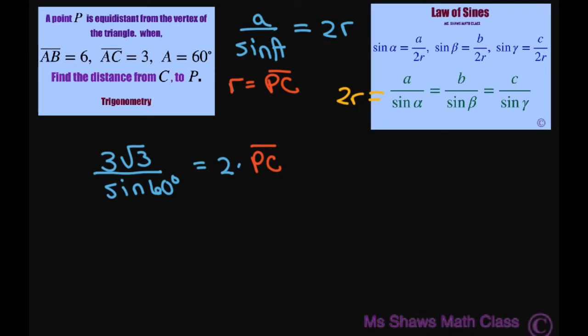So solving for this, we're going to get 3 square root of 3 divided by sine of 60 degrees, which is square root of 3 divided by 2, equals 2 times the length of PC.